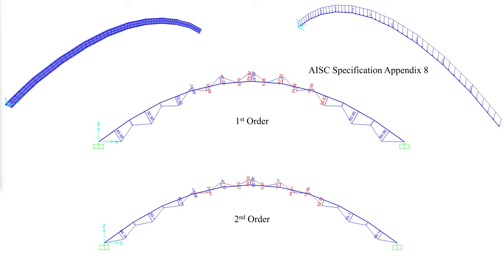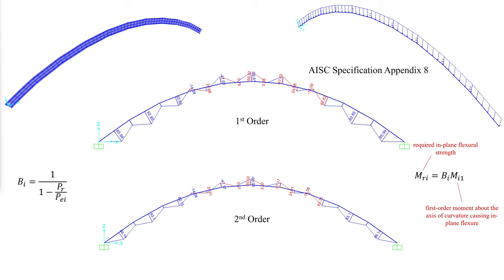The required in-plane flexural strength based on the amplified first-order moment is calculated as follows, where MI1 is the first-order moment about the axis of curvature causing in-plane flexure, and BI is the amplification factor, where PR is the required axial strength and PEI is the elastic in-plane critical buckling load, which was calculated in the previous video linked at the top and in the description below.